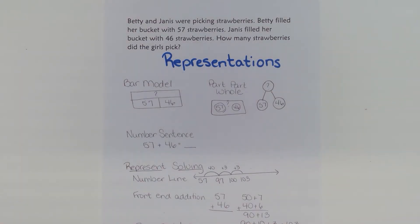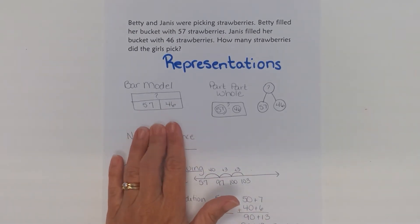They're picking strawberries. Betty filled her bucket with 57 strawberries. Janice filled her bucket with 46 strawberries. How many strawberries did the girls pick? So we want to talk to the students about what's the action happening in the story that they're putting those strawberries together and our representations of the problem itself can be through a bar model.